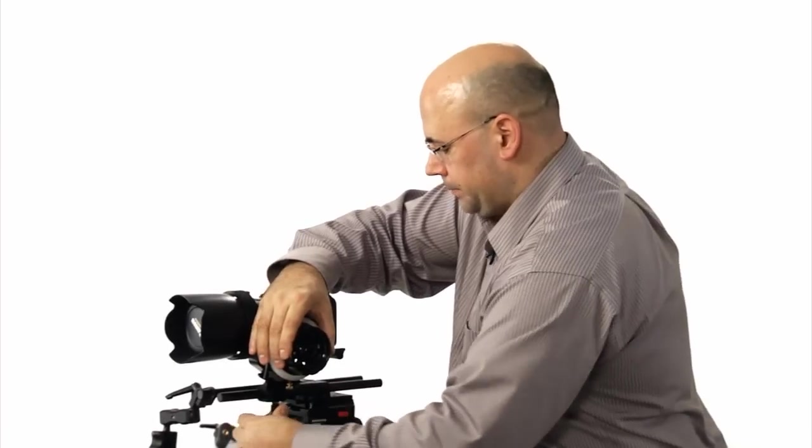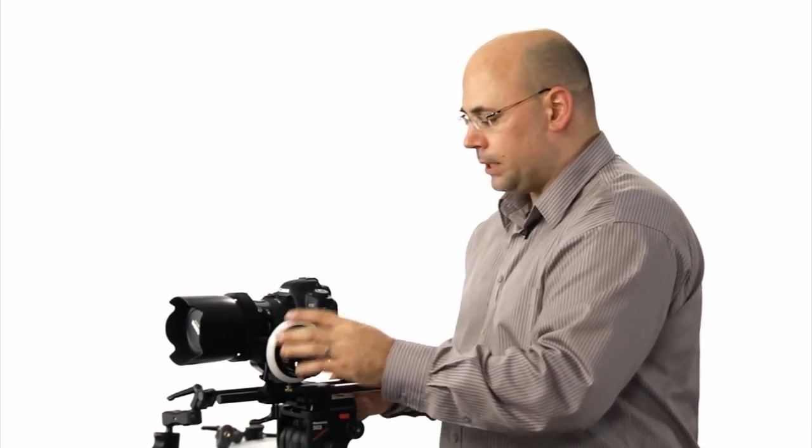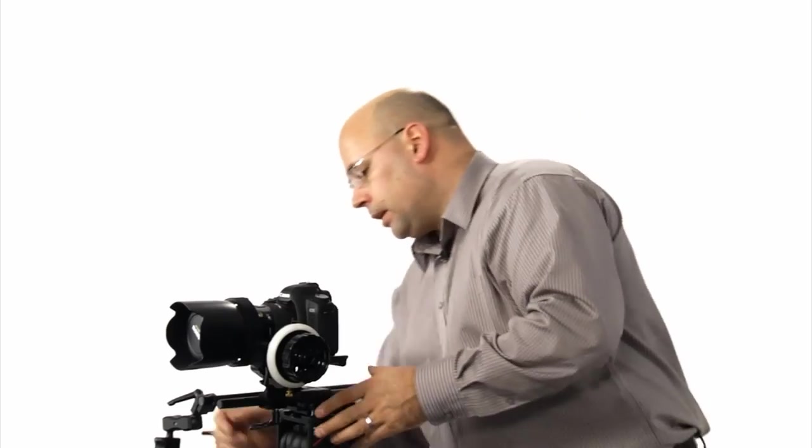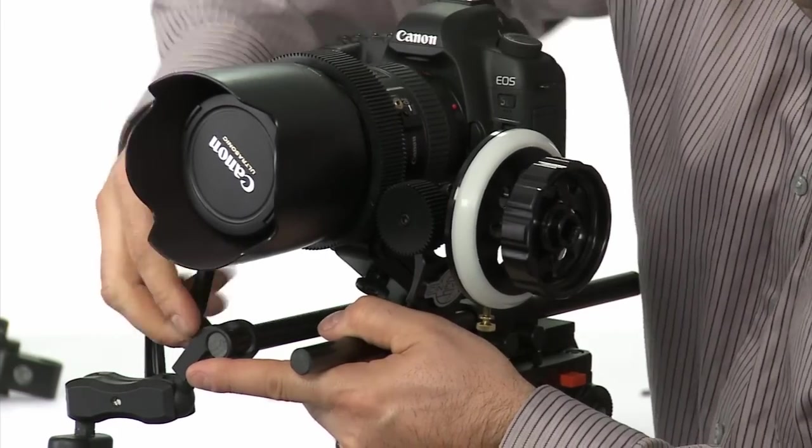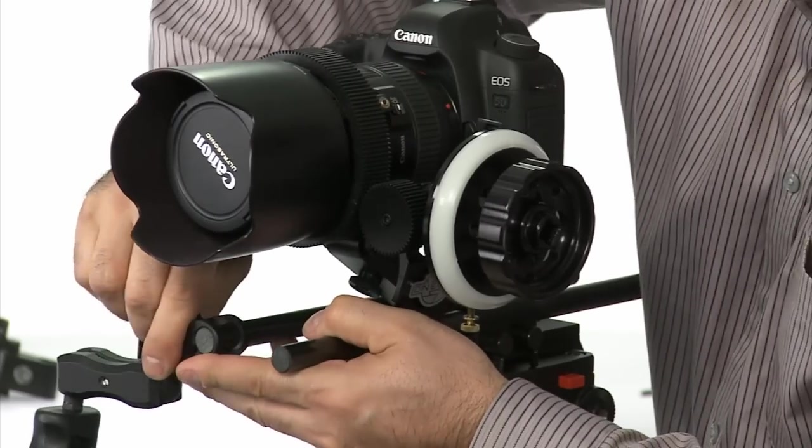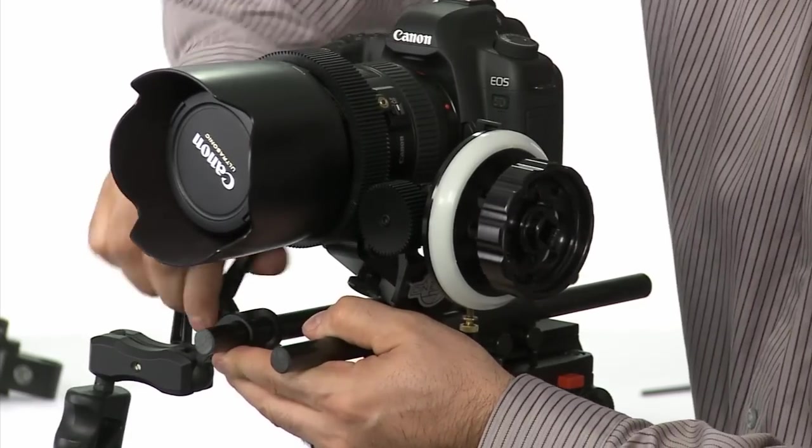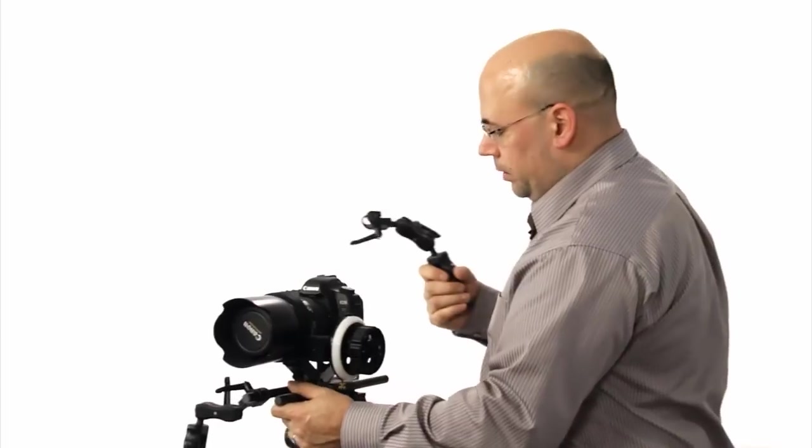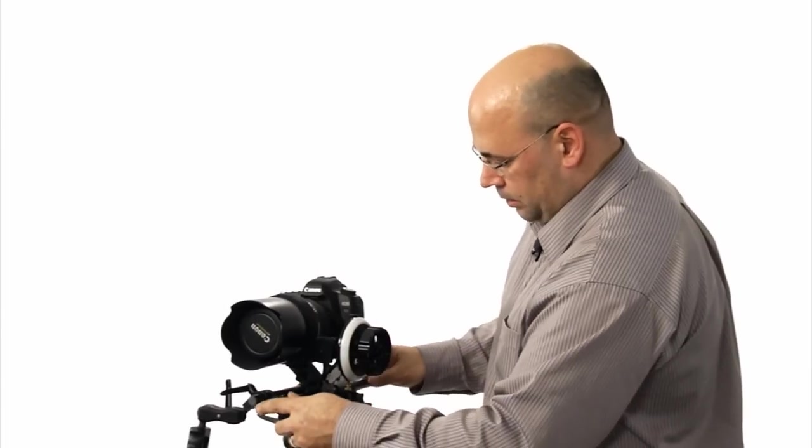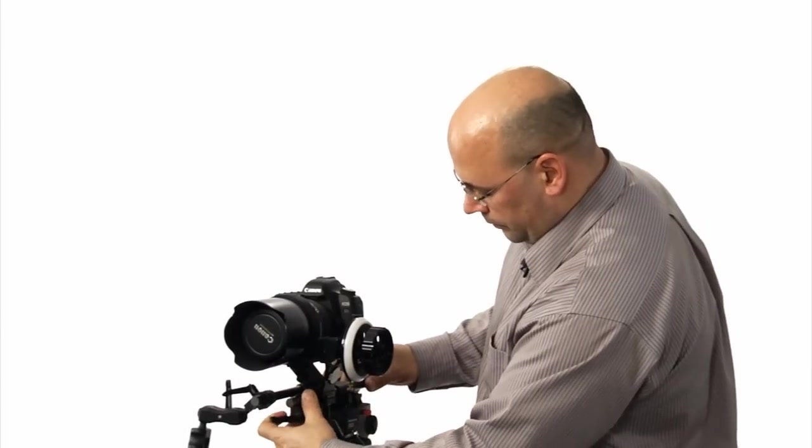So there we have the follow focus in place. I can throw on the other grip. Now, I'm going to probably slide our matte box into place, so I want to leave a little bit of room for that. So I'm going to actually move this grip back slightly. And we'll throw on the other grip, like so. And again, I'm leaving a little bit of room for the matte box. And of course, you're going to customize this rig to your needs, to your body size, all that kind of stuff.